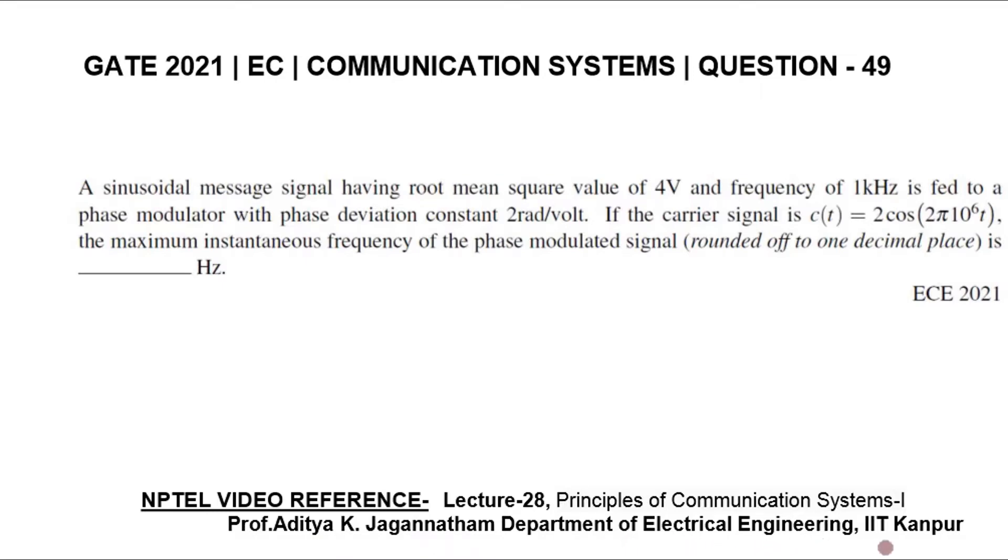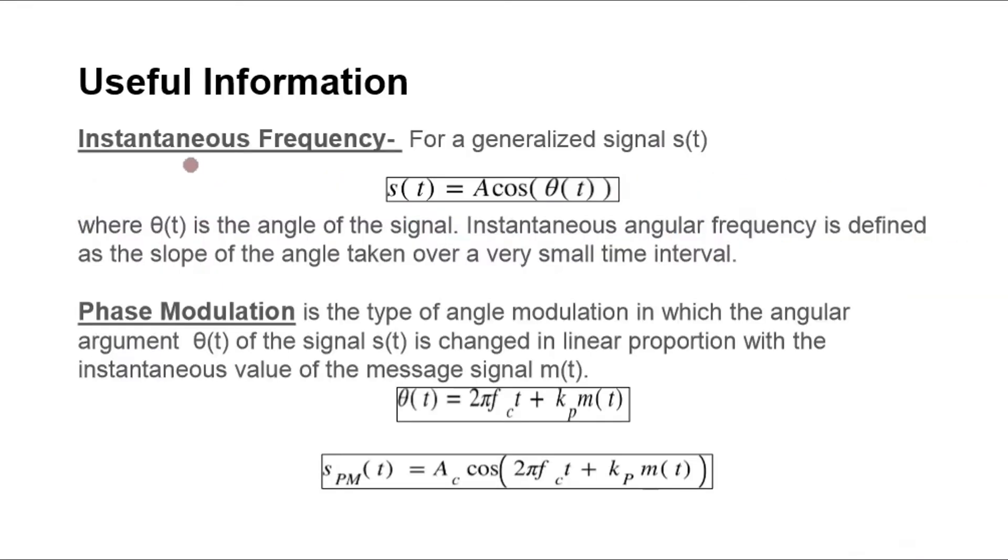Some useful information to solve this question. Instantaneous frequency for a generalized signal s(t) equals A cosine of θ(t), where θ(t) is the angle of the signal. Instantaneous angular frequency is defined as the slope of the angle taken over a very small time interval. Dividing instantaneous angular frequency by 2π we get the instantaneous frequency.